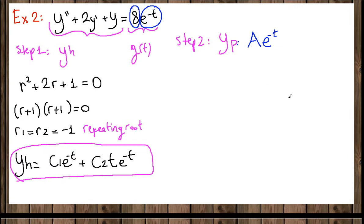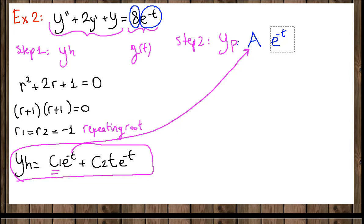We must be careful: the homogeneous solution and the particular solution must be linearly independent. Our homogeneous solution contains c1·e^(-t) and c2·t·e^(-t). If we try y_p = A·e^(-t), that duplicates the first term. So we multiply by a power of t — let's call it t^s — and try A·t·e^(-t) first.